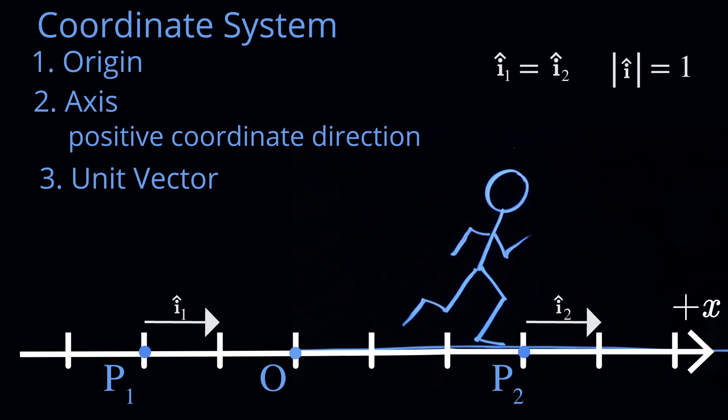So what makes this coordinate system unique, this Cartesian coordinate system, is that at every single point, no matter where we are, the unit vectors point in the positive direction. Because they have the same magnitude and direction, all of these unit vectors are equal. And we call that i hat.